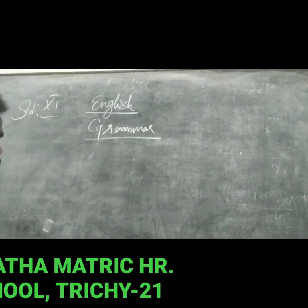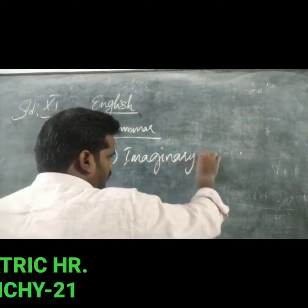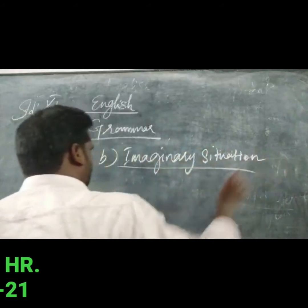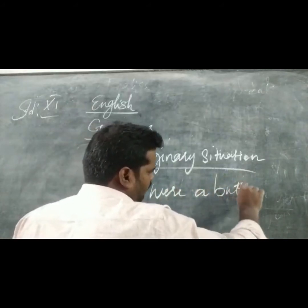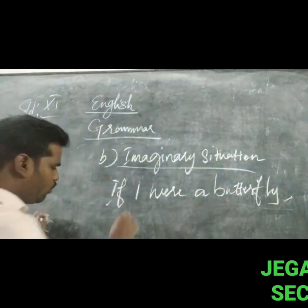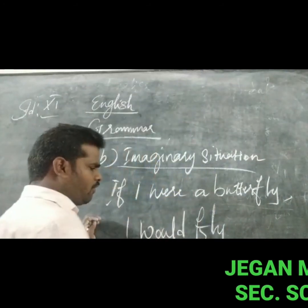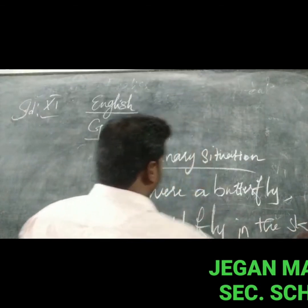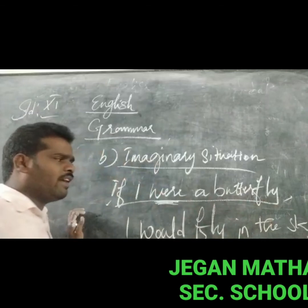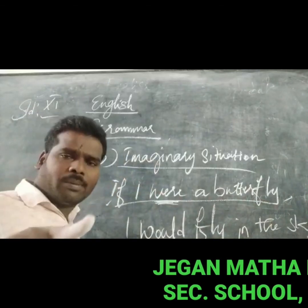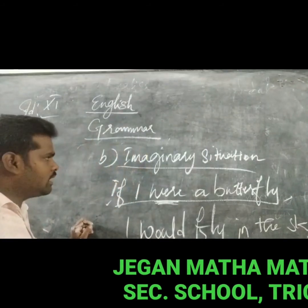Improbable also covers imaginary situations. For example: if I were a butterfly, I would fly in the sky. This is an imaginary situation — we use 'were' in the condition part. Subject would plus V1 for the result part. Another example: if I were an elephant, I would carry the weight.